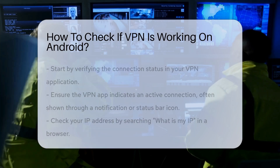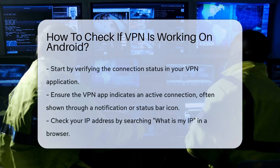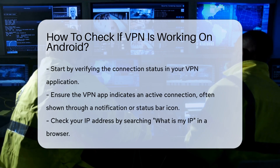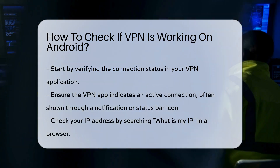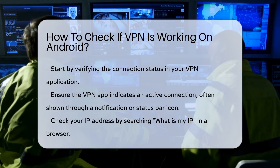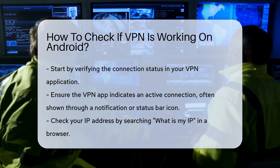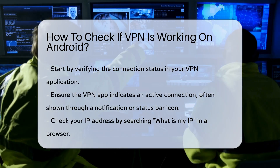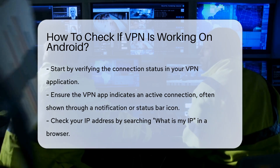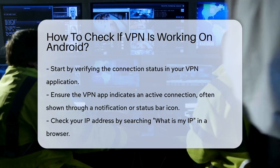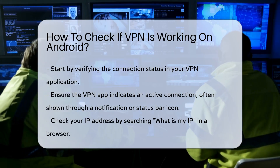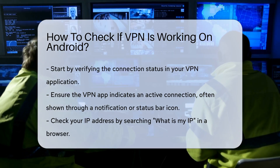To determine if your VPN is functioning correctly on an Android device, start by verifying your connection status. Open the VPN application and confirm that it indicates an active connection. Most reliable VPN apps display a notification or icon in the status bar when connected.